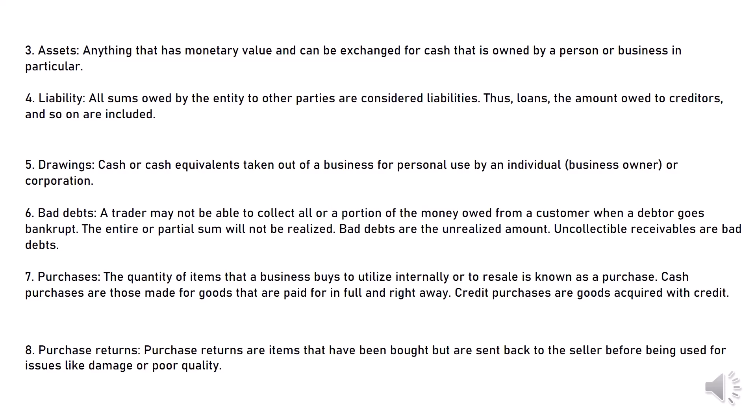5. Drawings: Cash or cash equivalents taken out of a business for personal use by an individual, business owner, or corporation. 6. Bad debts: A trader may not be able to collect all or a portion of the money owed from a customer when a debtor goes bankrupt. The entire or partial sum will not be realized. Bad debts are the unrealized amount — uncollectible receivables are bad debts.